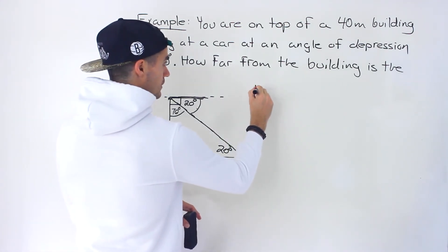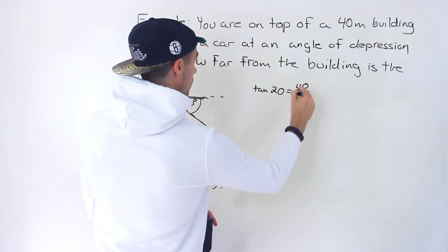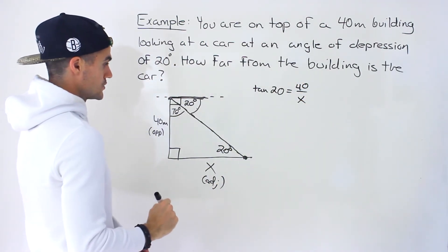So we can go tan of 20 equals the opposite side, 40, over the adjacent side, x. And we're solving for that adjacent side.